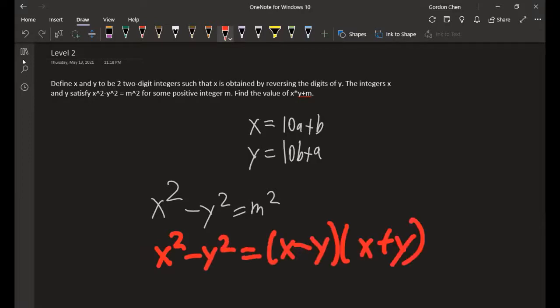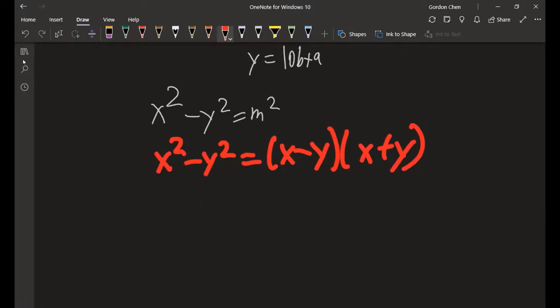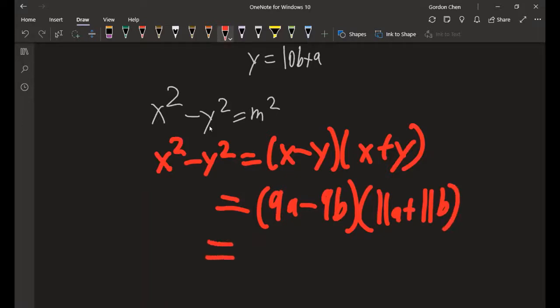That is, replacing, we get 9a minus 9b and 11a plus 11b. And expanding, that is 99 times a minus b times a plus b, which is m squared.